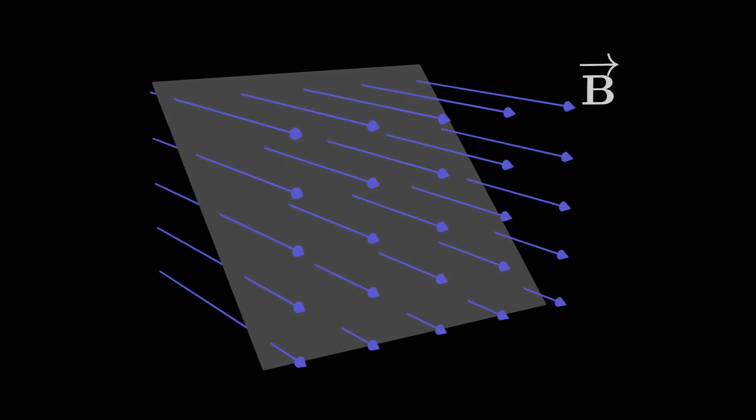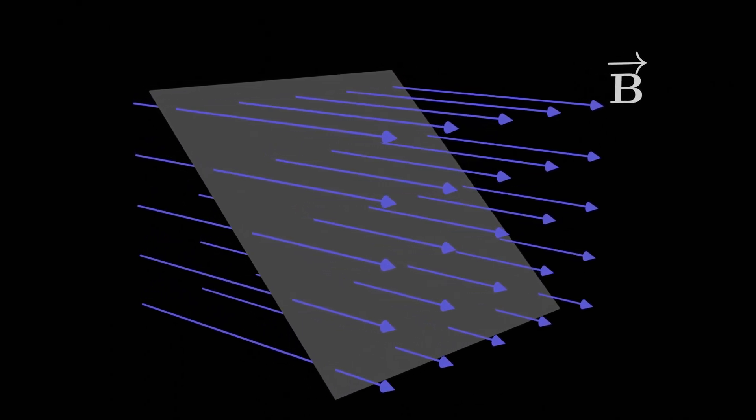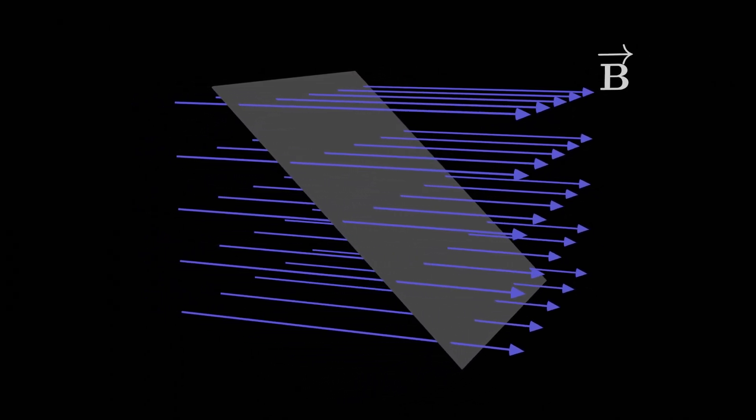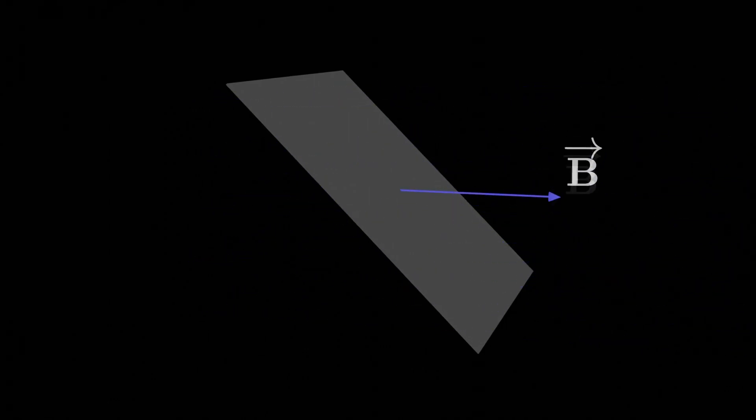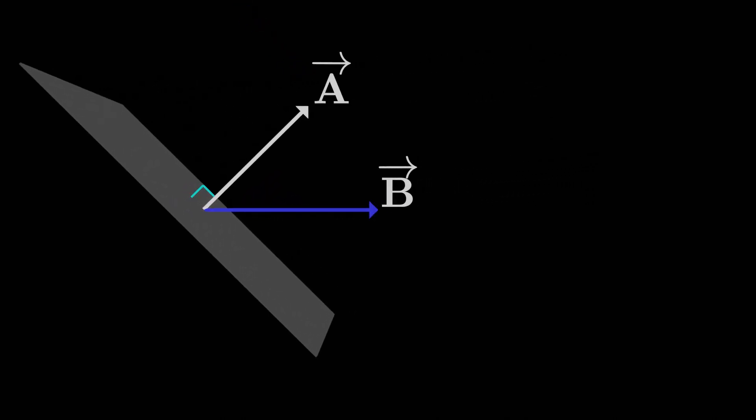Now we're calculating the magnetic flux through some area. It really is just as simple as that. If we have some area and a uniform magnetic field penetrates that area, we can call the area vector a vector that's perpendicular to the area and has a magnitude equal to the area itself.